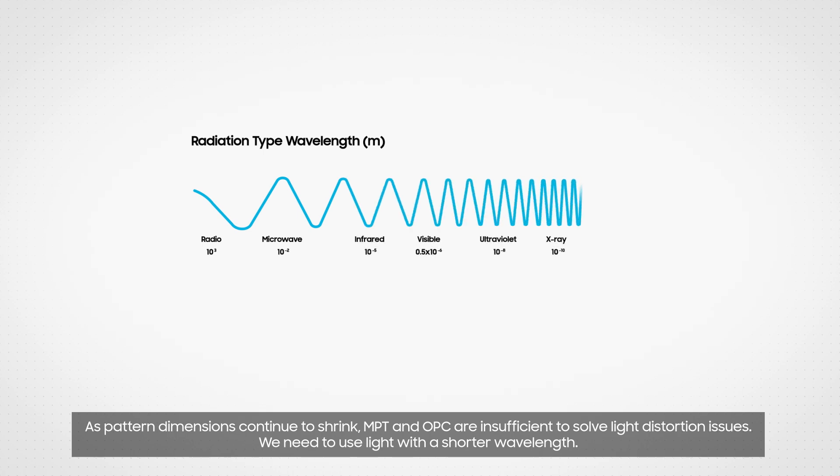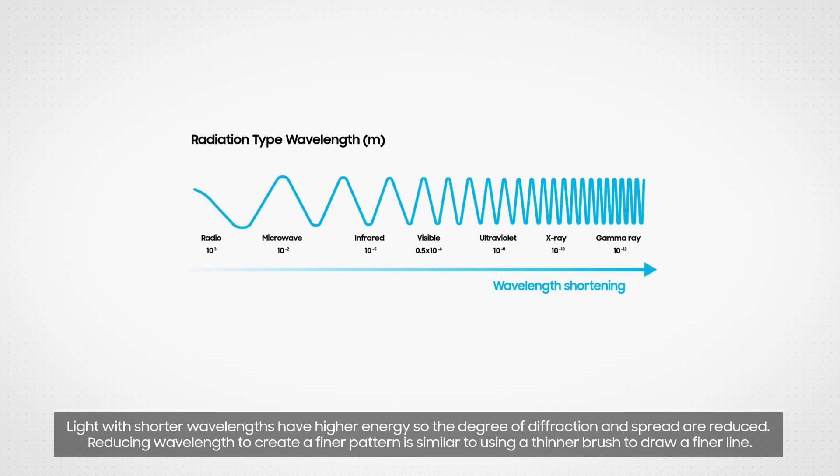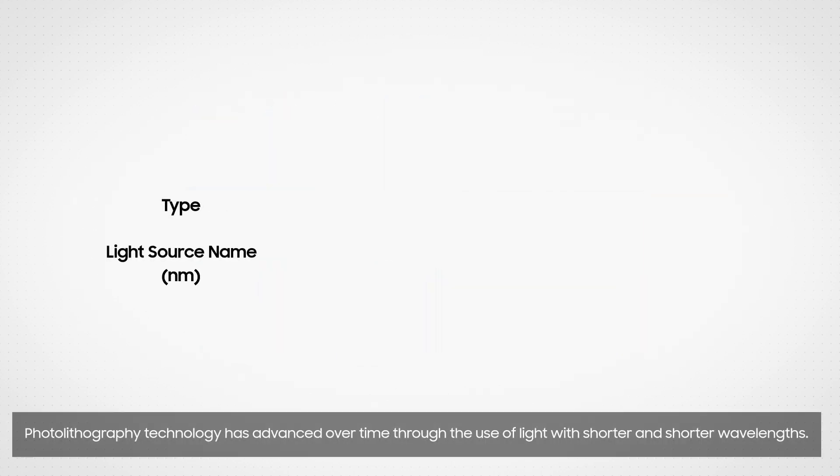As pattern dimensions continue to shrink, MPT and OPC are insufficient to solve light distortion issues. We need to use light with a shorter wavelength. Light with shorter wavelengths have higher energy, so the degree of diffraction and spread are reduced. Reducing wavelength to create a finer pattern is similar to using a thinner brush to draw a finer line.